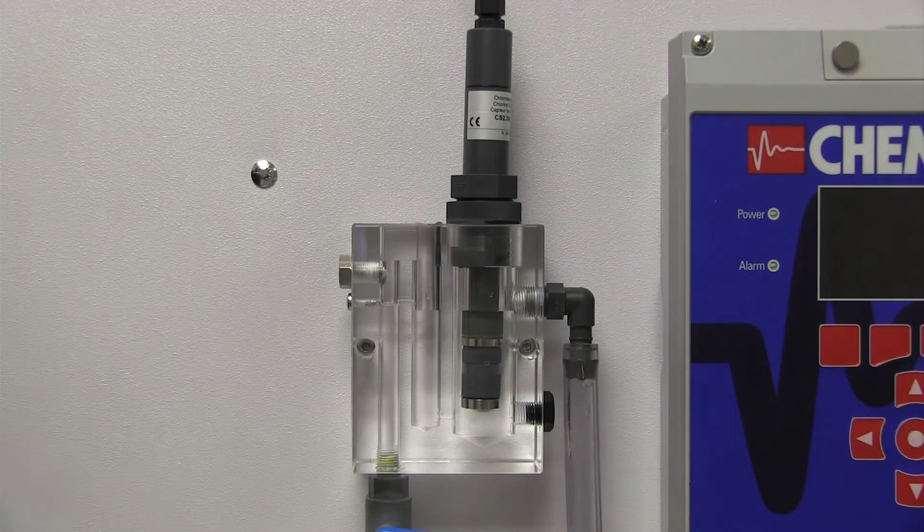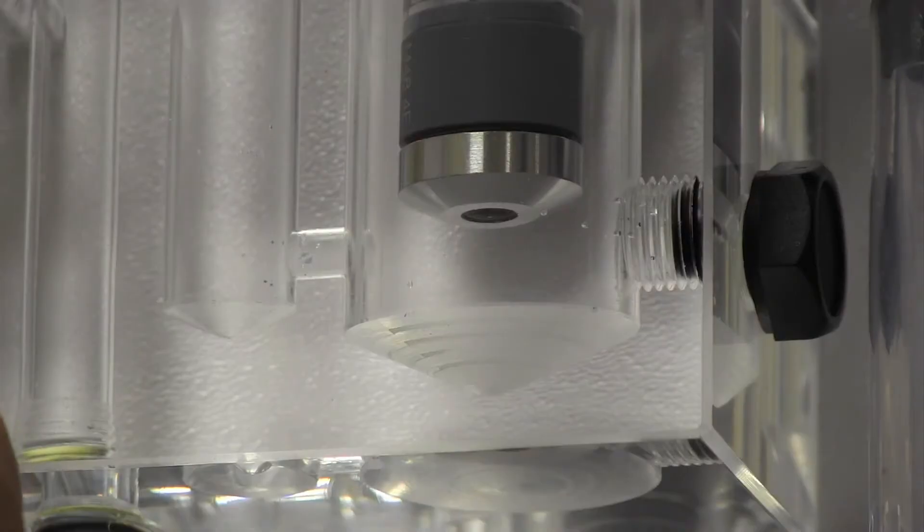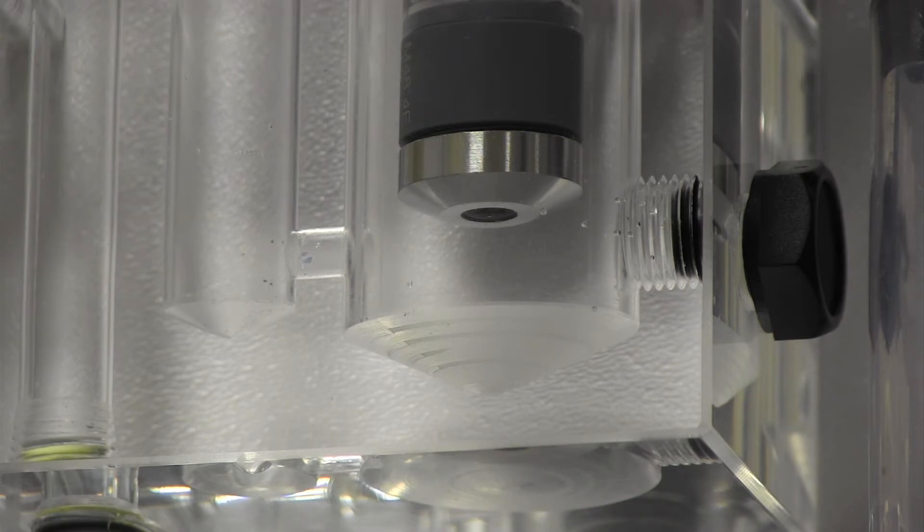Water exiting this tube needs to pass across the tip of the probe to prevent bubbles from forming on the membrane, which could subsequently impact the accuracy of the chlorine reading.